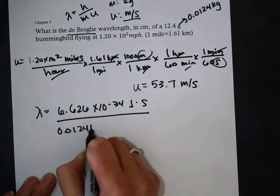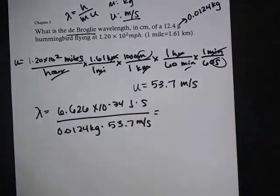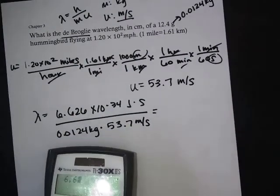Joules is a unit that can be broken down into kilograms, meters, and seconds. It's kilograms times meters squared per second squared. That's why these units are important.